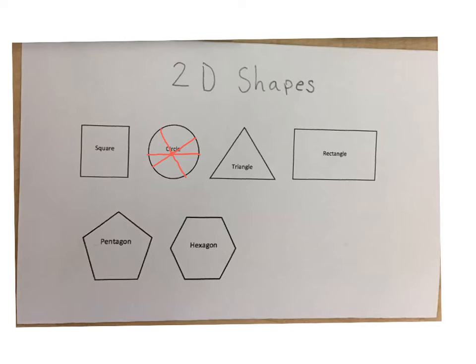Next we have rectangles, and a rectangle is four sides, four angles, and those angles are 90 degrees square corners. Rectangles also have two sets of parallel lines. That means these lines will never cross each other; they'll continue on forever without ever crossing each other.